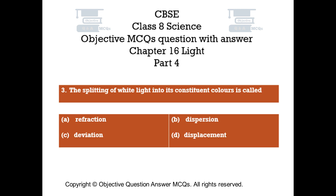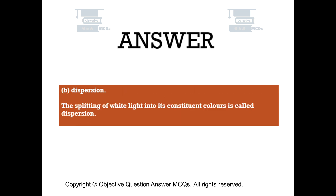Question number 3. The splitting of white light into its constituent colors is called: Option A refraction. Option B dispersion. Option C deviation. Option D displacement. The right answer is option B: dispersion. The splitting of white light into its constituent colors is called dispersion.